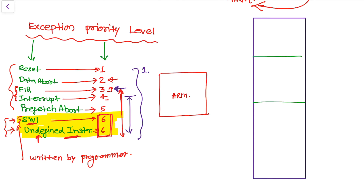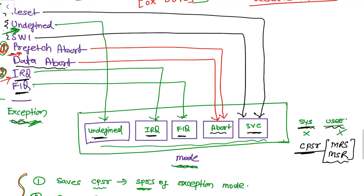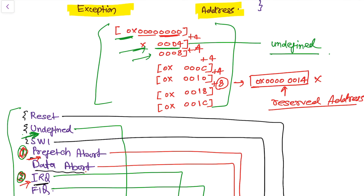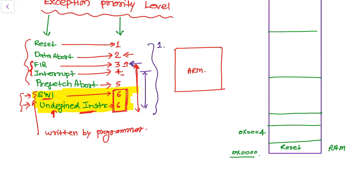The exception vector table resides in RAM memory and the address starts from 0x00, which is the address of Reset. Then it jumps to 0x0004, and that address is the address of the Undefined Instruction exception mode. If an Undefined Instruction exception occurs, the program counter comes to this address, which is 0x0004.